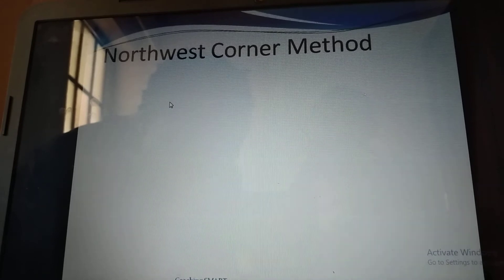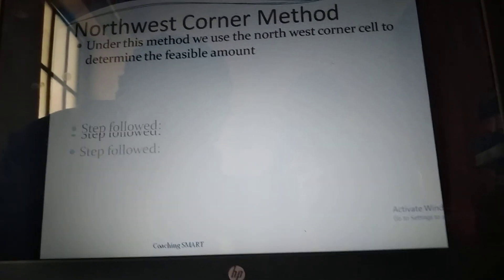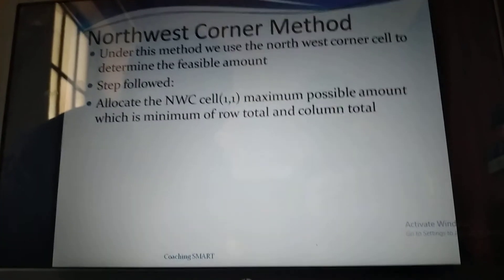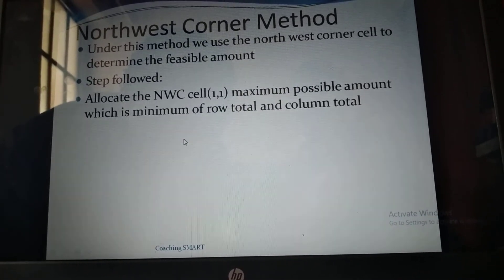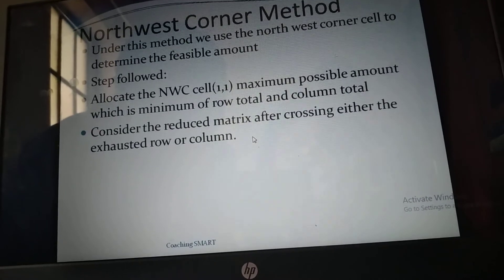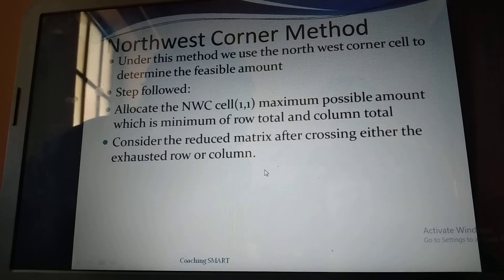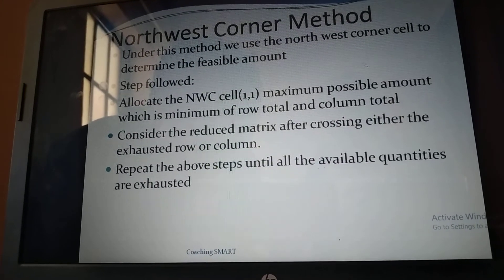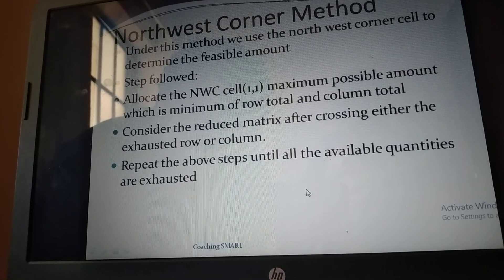We will take the Northwest Corner Method as our example. Under this method, we use the northwest corner cell to determine the feasible amount. Steps: one, allocate to the northwest corner cell (cell 1,1) the maximum possible amount, which is the minimum of the row total and column total; two, consider the reduced matrix after crossing out the exhausted row or column; three, repeat the above steps until all available quantities are exhausted, to achieve the optimal feasible solution.